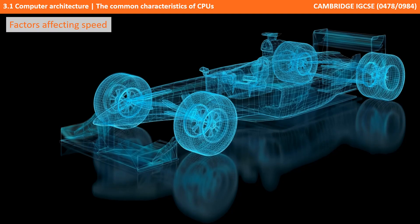Let's think about a typical racing car as an analogy before we look at the central processing unit itself. What are all the factors affecting the speed of this car? Well, obviously we have the horsepower of the engine itself, but that's not the only factor. In the same way, with a CPU you've got how fast the clock can tick, measured in hertz, but there are many other factors which affect how fast it can perform.